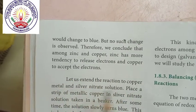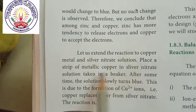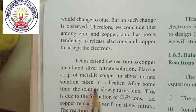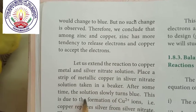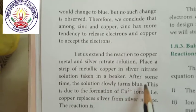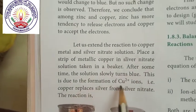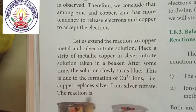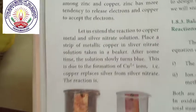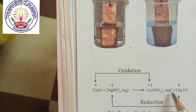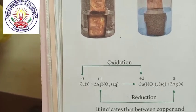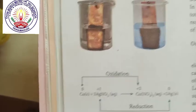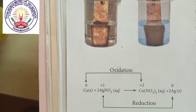Let us extend the reaction to copper metal and silver nitrate solution. Place a strip of metallic copper in silver nitrate solution taken in a beaker. After some time, the solution slowly turns blue, due to the formation of copper 2+ ions — that is, copper replaces silver from silver nitrate. The reaction is: copper plus silver nitrate gives copper nitrate plus silver. This indicates that between copper and silver, copper has the tendency to release electrons and silver to accept electrons.